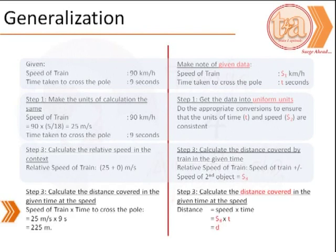As the last step, we calculate the distance travelled by the train in the given time at the calculated speed. Since the size of the pole is negligible, this would also be the length of the train. Therefore, we have the answer.